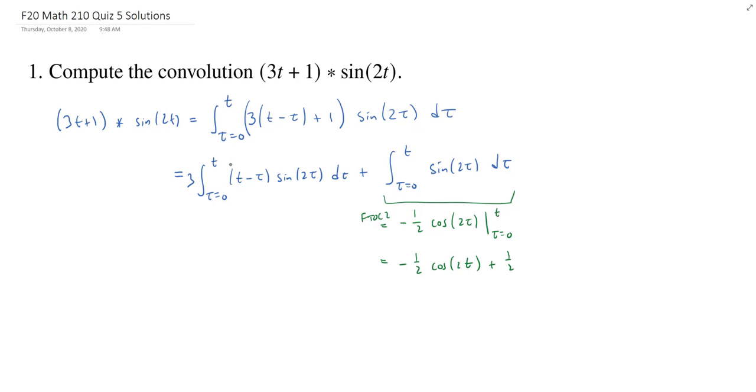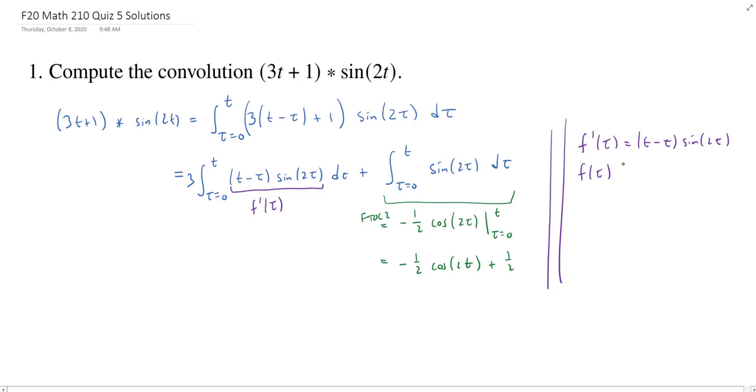How about this first integral? Well, this is an optimal situation for doing integration by parts. So let's give a name to this bit here. We'll call this f prime of tau. So we'll do our integration by parts on the side. f prime of tau is t minus tau times sine of 2 tau, and we're looking for f of tau. So integration by parts, we're going to split this up using our tabular method. We're going to make our t minus tau our so-called u, and our dv will be the sine of 2 tau.